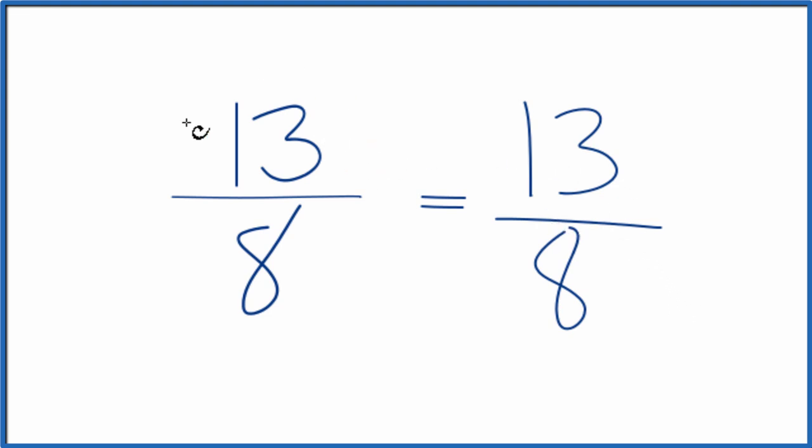So you really can't simplify 13 over 8 any further. It's already in lowest form. You could, however, change it to a mixed number if you wanted to do that. Right now, it's an improper fraction. The numerator is bigger than the denominator.